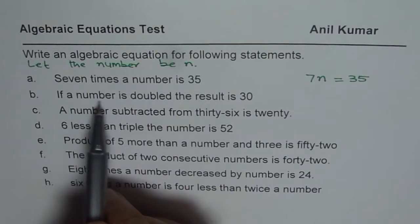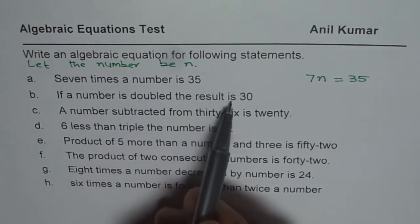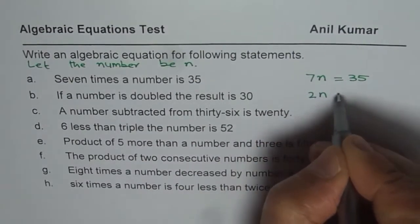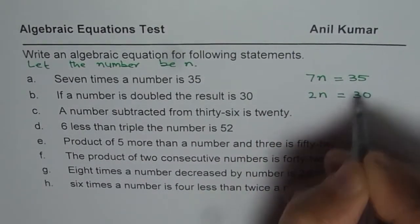Second one is, if a number is doubled, the result is 30. So if you double a number, that means 2 times n, then the result is 30. So that is how you get it.